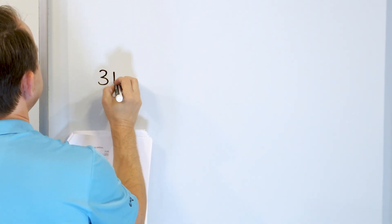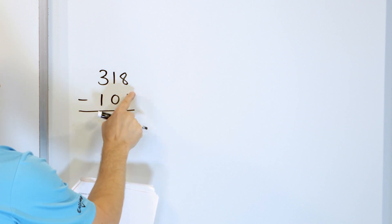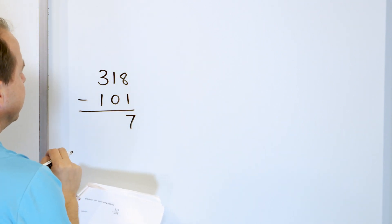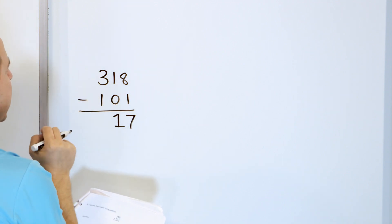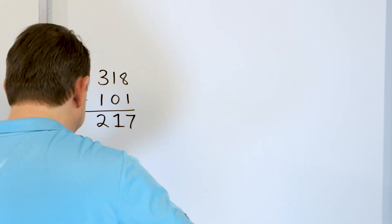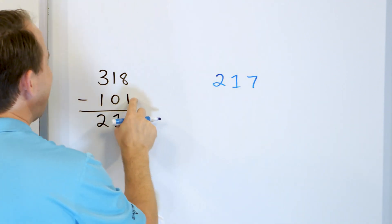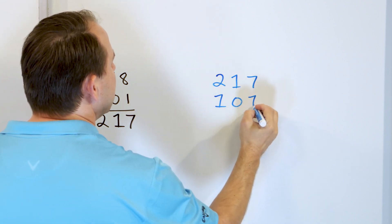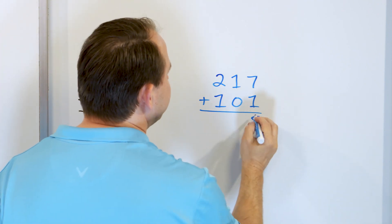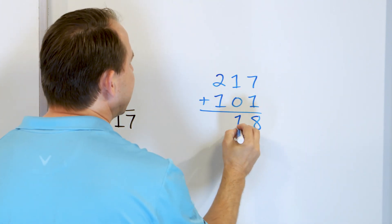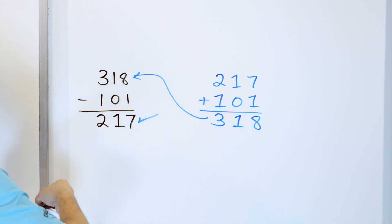What about 318 and we'll subtract 101 from that. What is 8 minus 1? You start with 8, take 1 away, you have 7. What is 1 minus nothing? You still have 1 left over. What is 3 minus 1? You go down and you have 2. So we think the answer is 217, but we want to check it. 217 plus 101: 7 plus 1 is 8; 1 plus nothing is 1; 2 plus 1 is 3. That matches exactly, so we know our subtraction was correct.